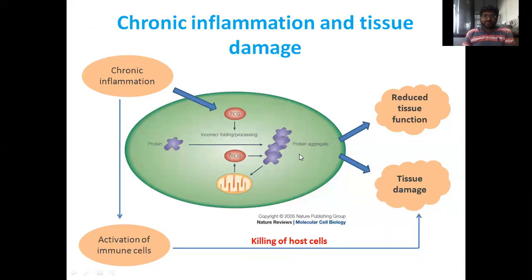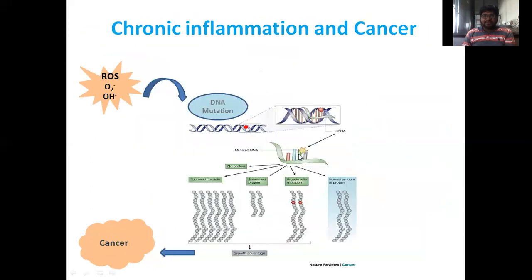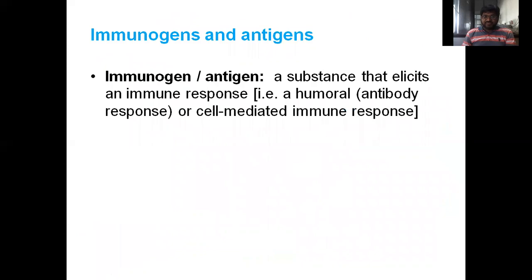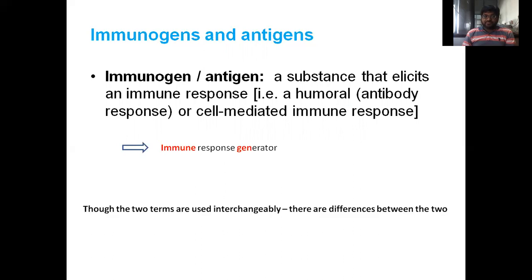Finally, immunogen and antigen: an immunogen is a substance that elicits an immune response — either humoral or cell-mediated. An antigen is a substance that acts as foreign material and is responsible for eliciting or generating the immune response of our body. Thank you so much for listening.